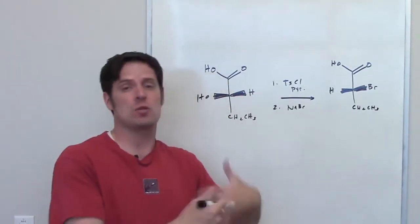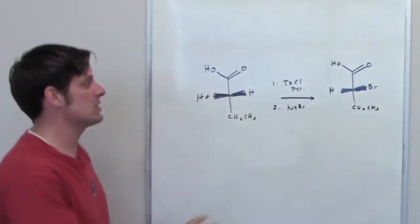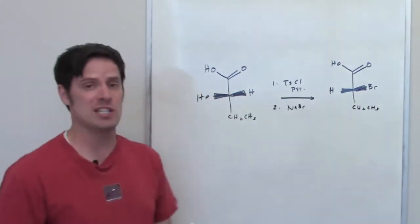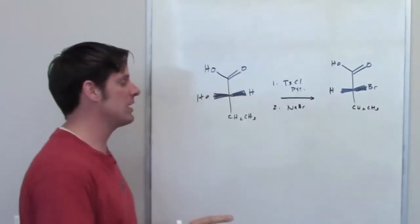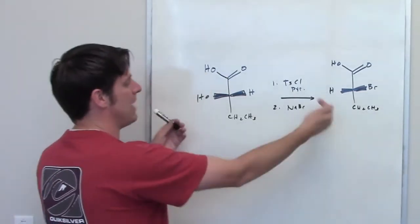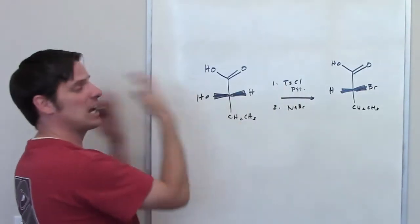I'll put a link here to a video in which I discuss it. Basically all it does is it converts an OH into an OTS, which is a wicked good leaving group. It's strong enough of a leaving group, in fact, that a bromide, a Br minus, can come in as a nucleophile and kick it off.